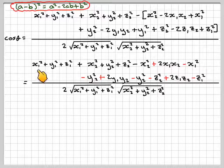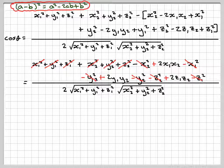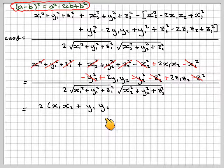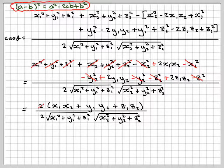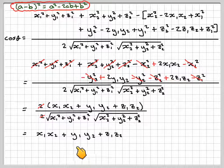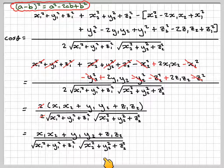Lots of things now cancel out. The x1², y1², z1², x2², y2², z2² squared terms all cancel, and we're left with 2x1·x2 + 2y1·y2 + 2z1·z2 over 2|a||b|. The 2's cancel, leaving x1·x2 + y1·y2 + z1·z2 over the square root of (x1²+y1²+z1²) times the square root of (x2²+y2²+z2²).